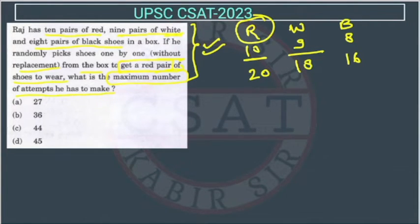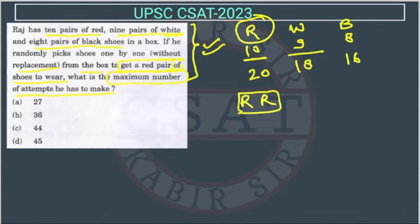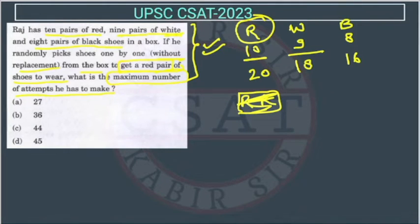So maximum they are asking. The chances are: if he is lucky and picks one — if the first pick is red and the next pick is also red — so this is the minimum chance, you will get it in two only. But they are asking the maximum number of attempts, meaning he is completely unlucky — so at the last, how many attempts does he have to make so that he gets the red ones?